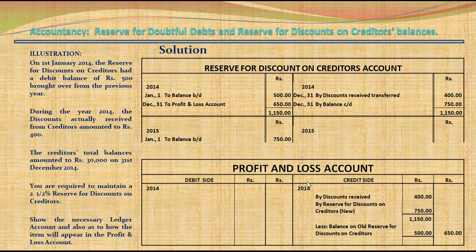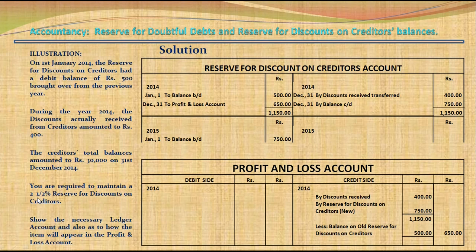Let us solve an illustration about reserve for discount on creditors. On 1st January 2014, the reserve for discount on creditors had a debit balance of Rs. 500 brought over from the previous year. During 2014, the discount actually received from creditors amounts to Rs. 400, and the creditors' total balances amount to Rs. 30,000 on 31st December. A reserve of 2.5% for discounts on creditors is required to be maintained. In the reserve for discount on creditors account, the debit balance brought down is Rs. 500, and the discount received of Rs. 400 is credited.